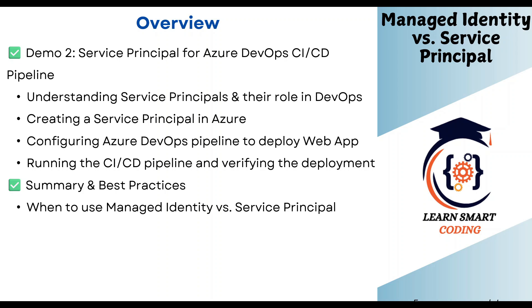We'll also grant the required permissions so that the web app can access the Azure Key Vault to get the secrets. We'll be implementing it in .NET Core Web API 9 to see how securely it fetches secrets from the key vault. The second live demo will be the service principal for the Azure DevOps CI/CD pipeline. You will see how CI/CD pipelines run and verify the deployment. Finally, we'll talk about best practices and a summary of when to use managed identity and when to use the service principal.